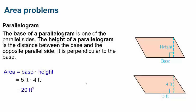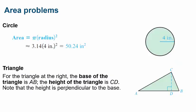For a parallelogram, the base is one of the parallel sides and the height is the perpendicular distance between the base and the opposite parallel side. The area of a parallelogram is base times height. For example, a base of 5 feet and a height of 4 feet gives 20 ft². For a circle, the area equals pi times the radius squared. If the radius is 4 inches, then pi times 4² equals 3.14 times 16 equals 50.24 in².